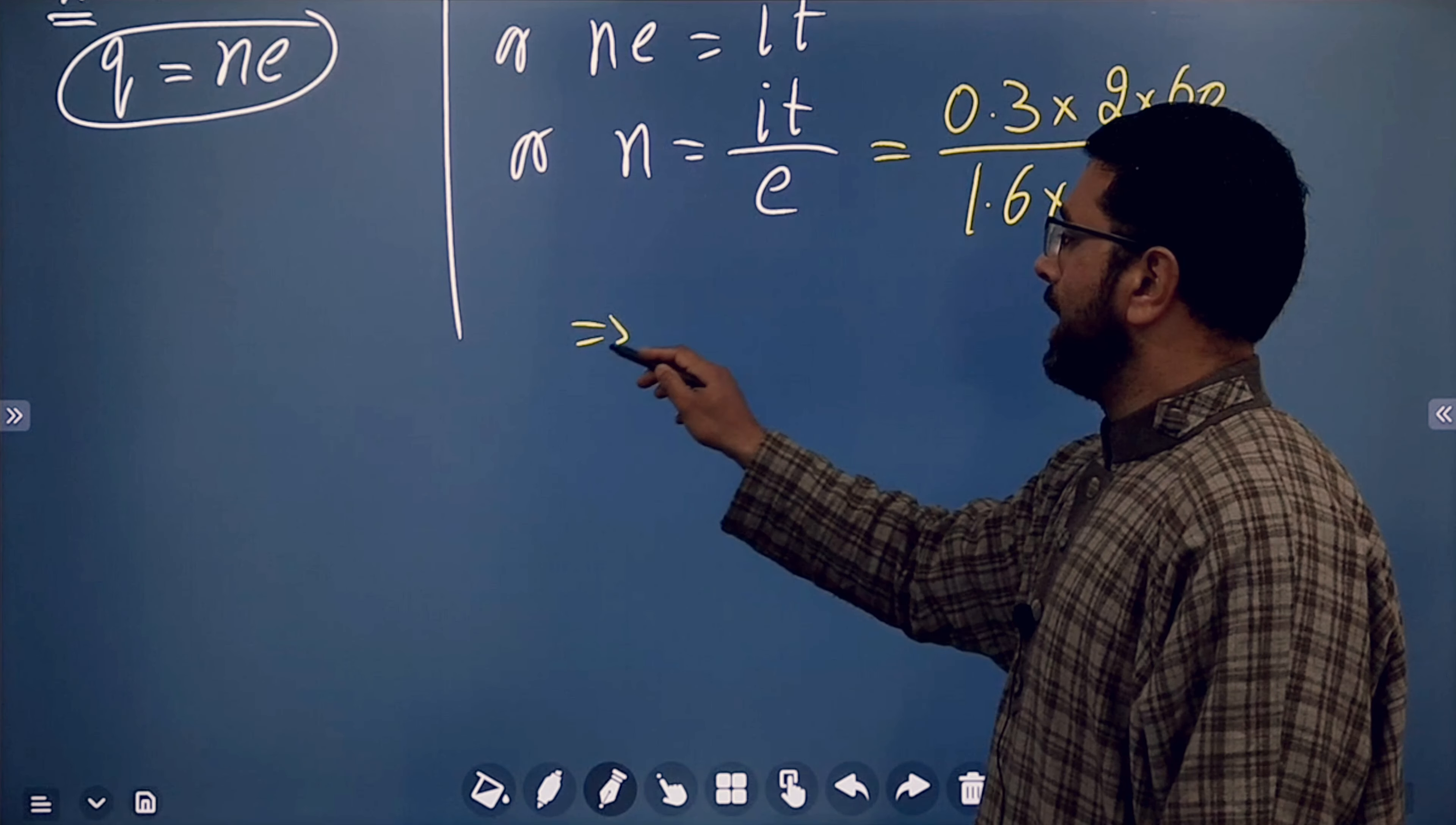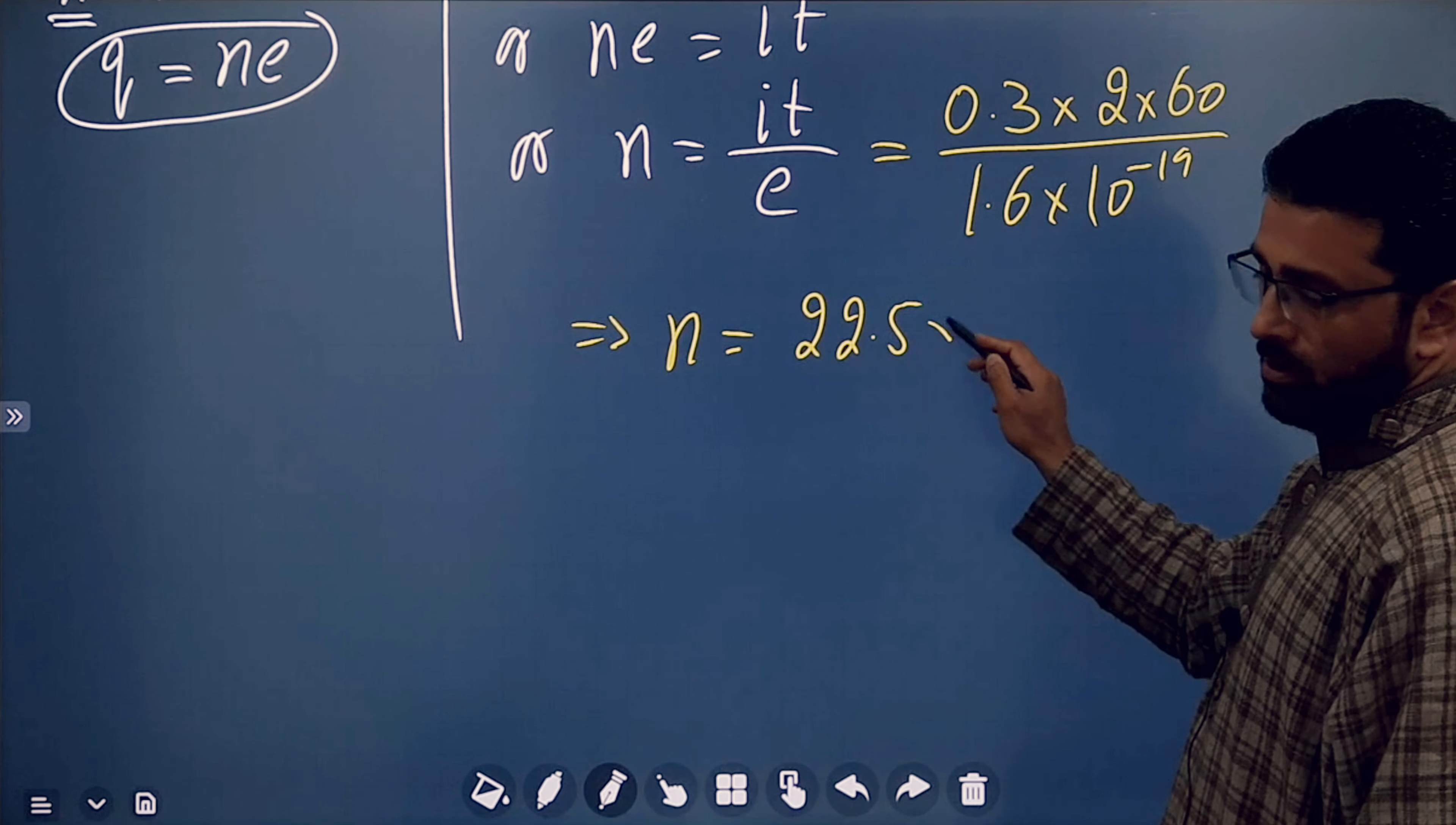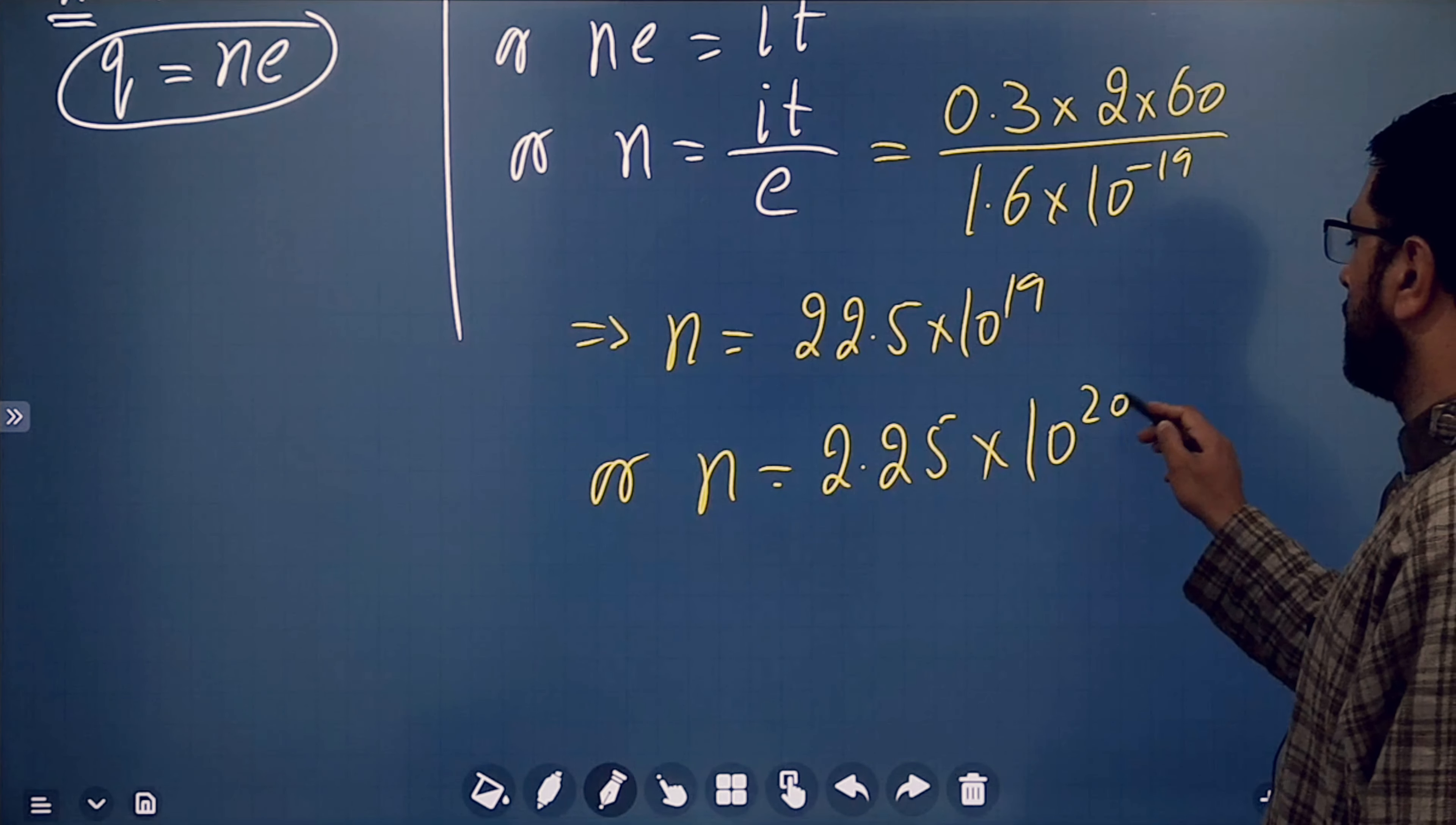So this means n is equal to, now this thing I have worked out already, is 22.5 into 10 to the power 19. Or we can write it this way, n is equal to 2.25 into 10 to the power 20 electrons.